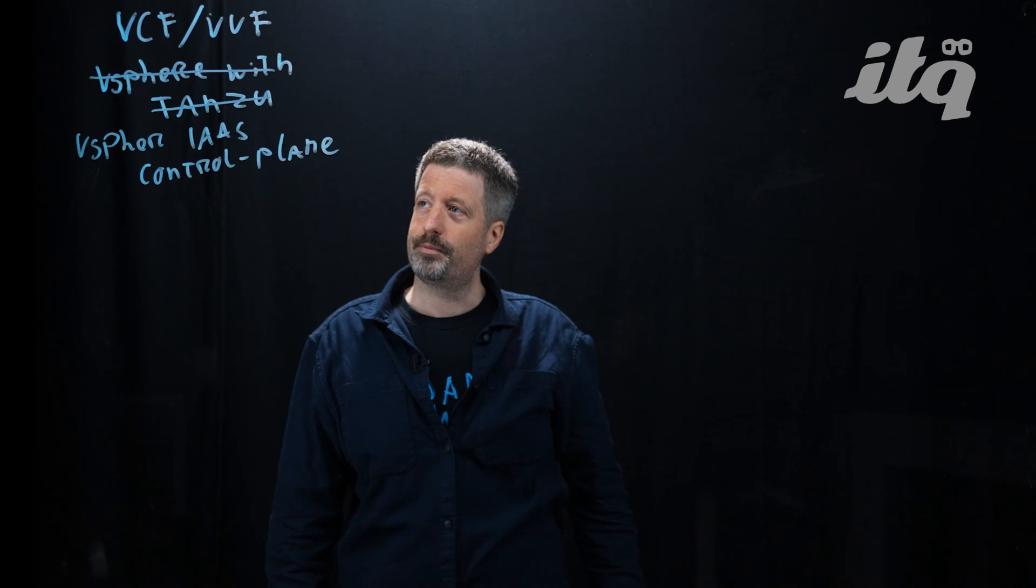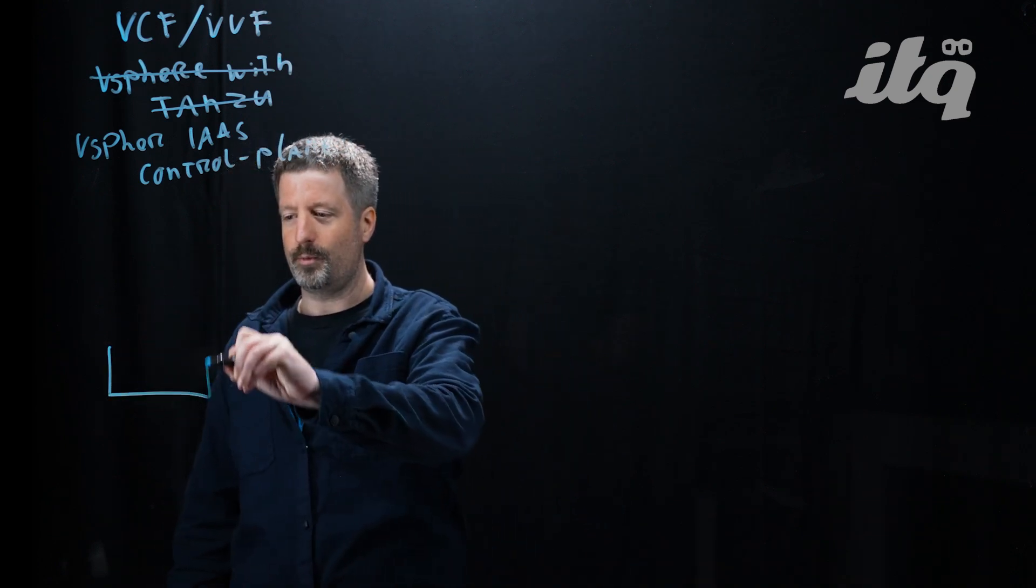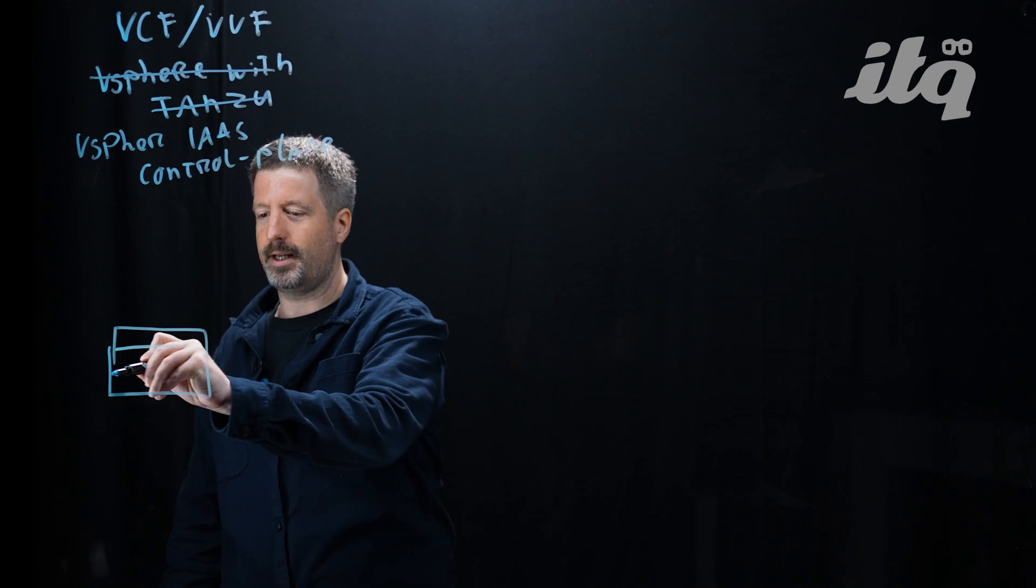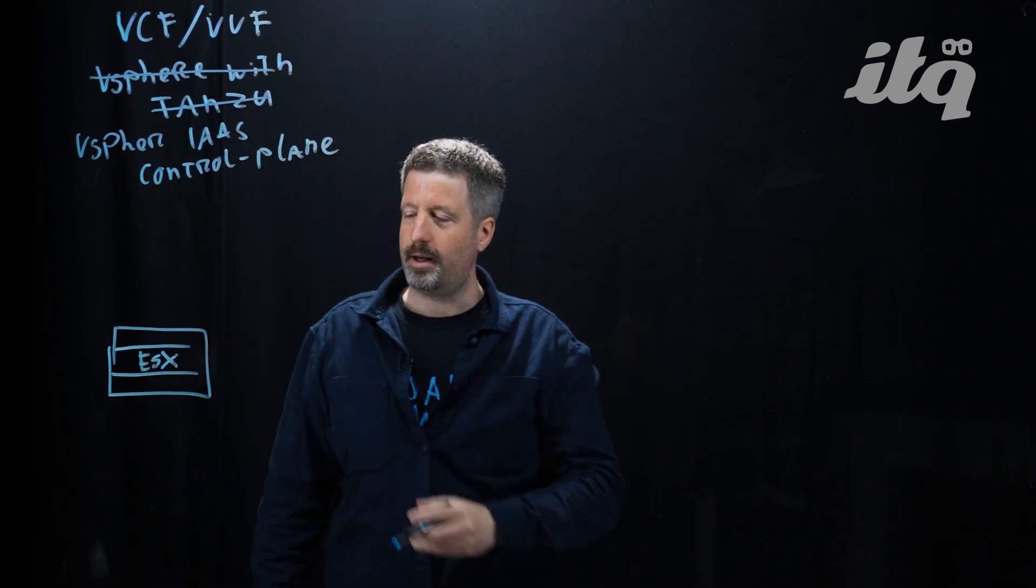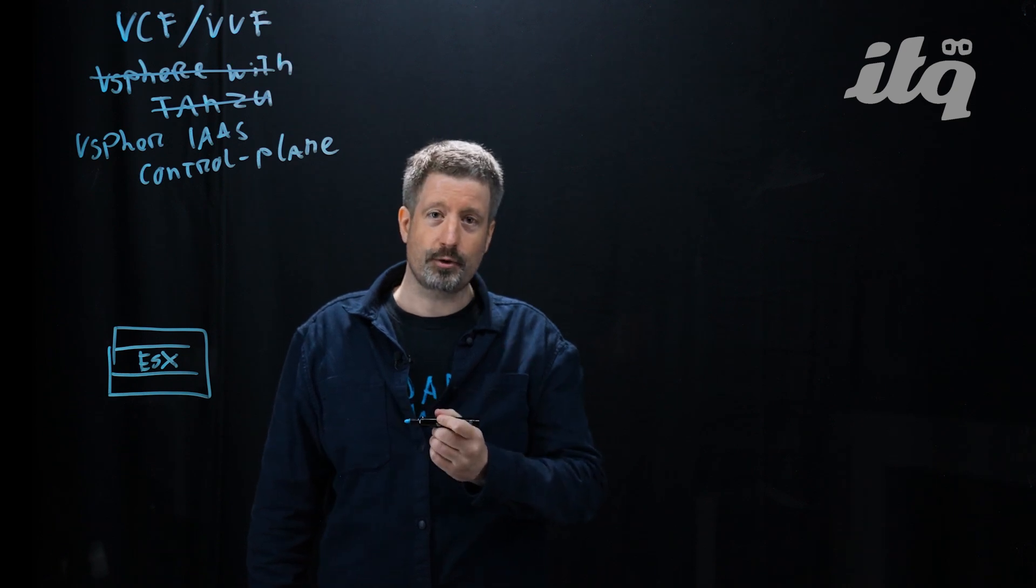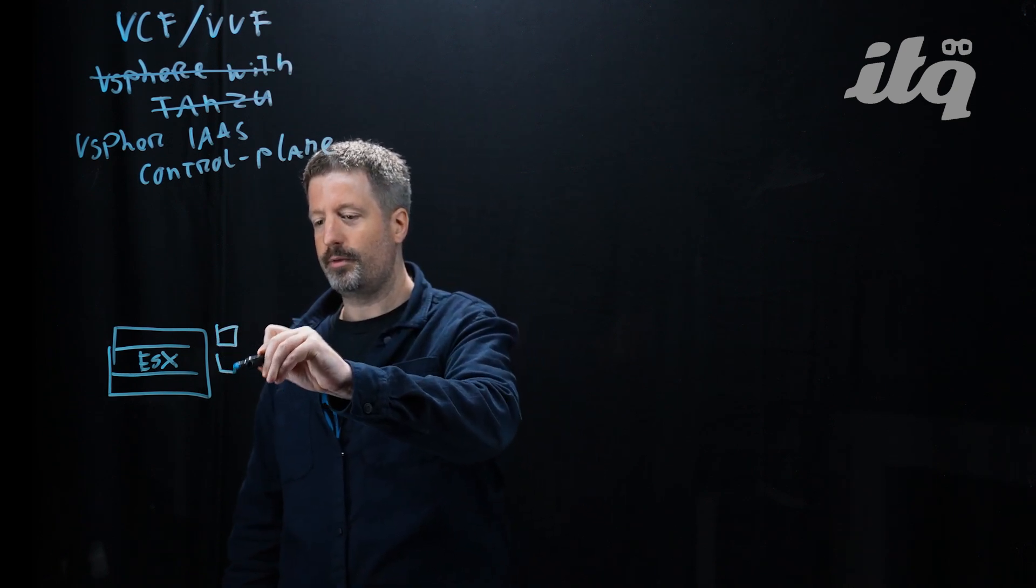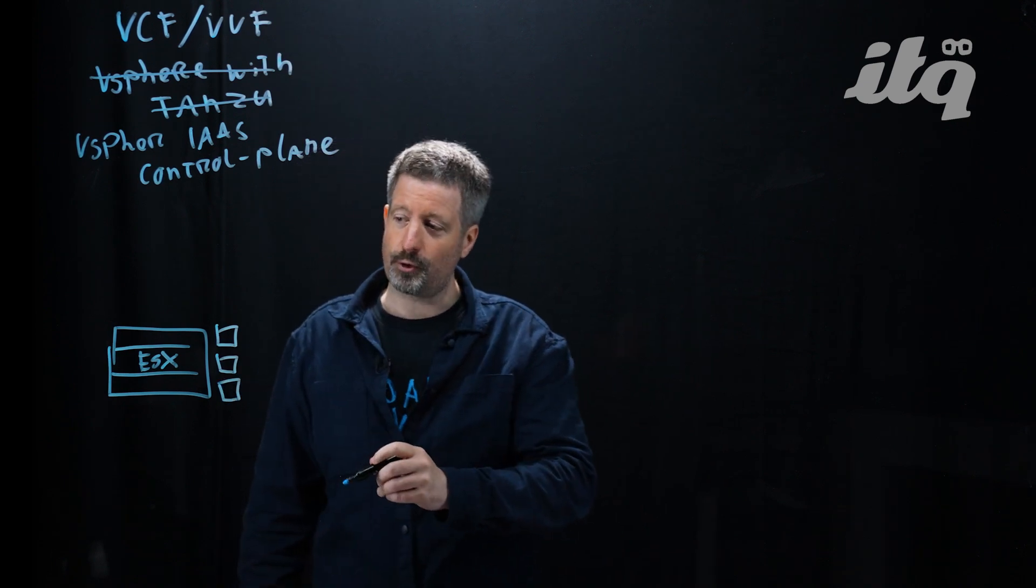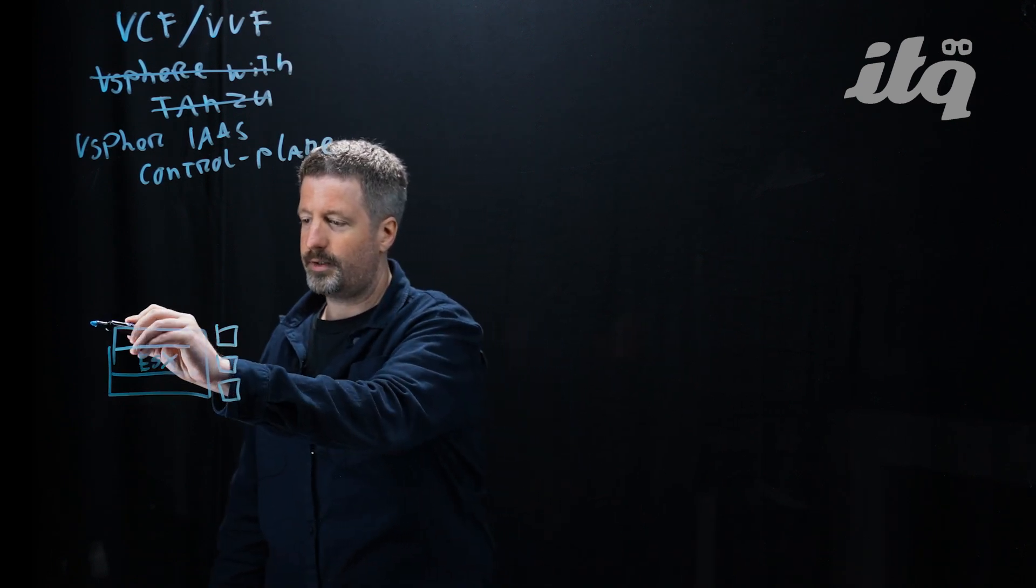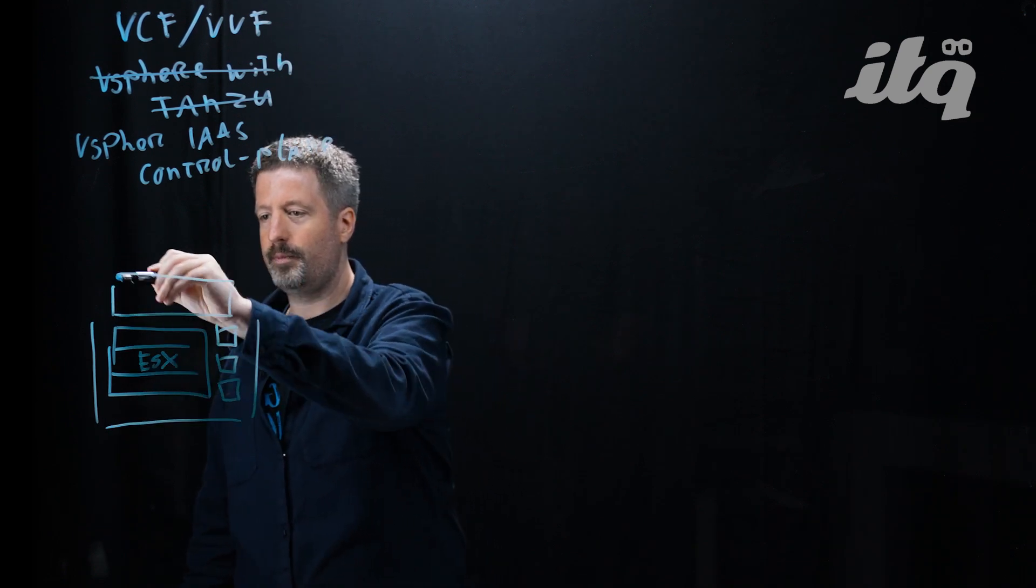In order to enable the vSphere ES control plane, we start with the element we all know, an ESX cluster. When we enable the vSphere ES control plane on ESX, it adds a number of VMs, which we call the supervisor control plane VMs, and it turns your ESX cluster into what we call the supervisor.